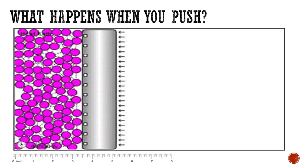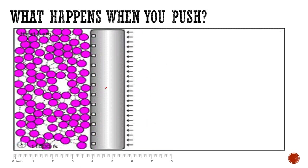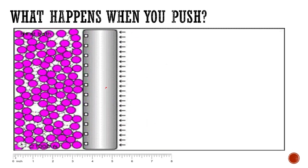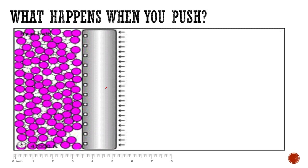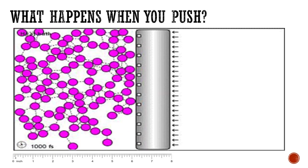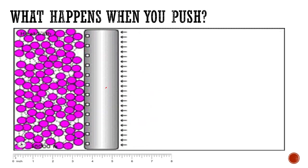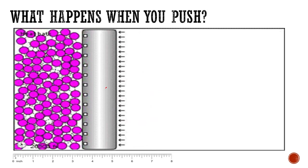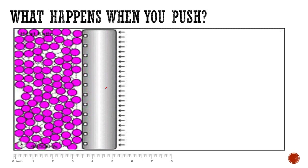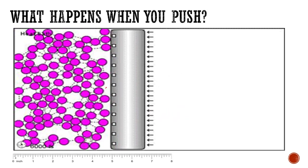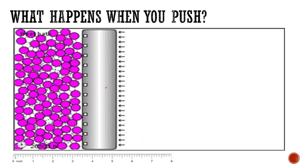What happens when you push this plunger towards the left? The small circles represent the gas molecules, and the plunger represents the pressure. The space these gas molecules occupy represents the volume. What happens to the volume of the gas when the pressure is increased?